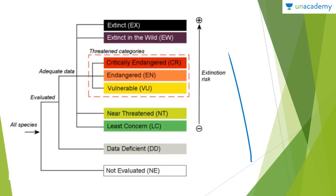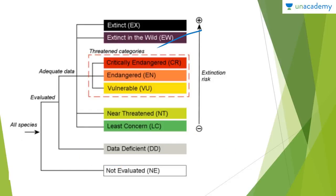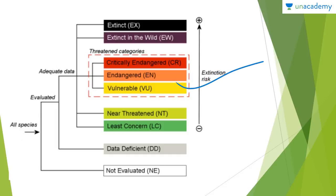To summarize the categories visually: Not Evaluated and Data Deficient have no assessment done. Extinct and Extinct in the Wild are their own categories. The threatened categories are Critically Endangered, Endangered, and Vulnerable. Near Threatened and Least Concern species are not facing an immediate risk of extinction.